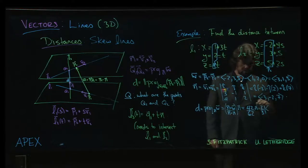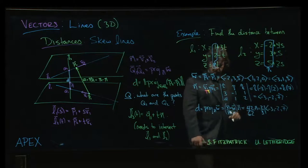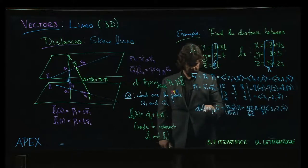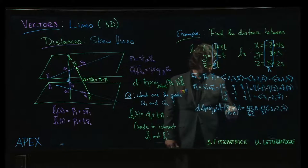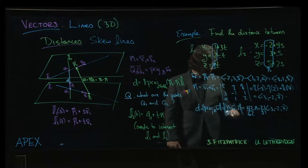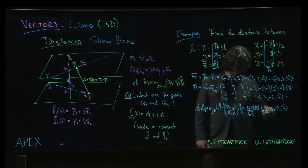So 21 over 31 times minus 3, minus 2 and 7. And the distance of course is not the vector but the magnitude. So we have that magnitude there.